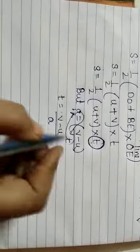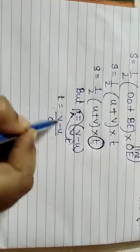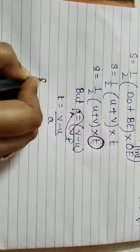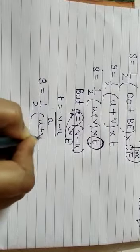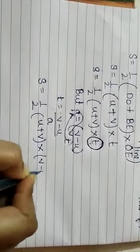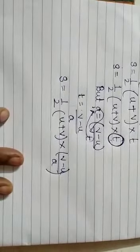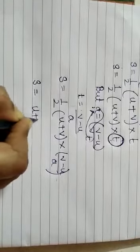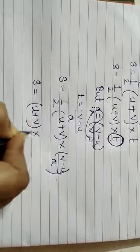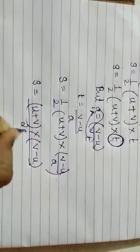Now in my equation, in place of t, I can put this as a value. So the equation is S is equal to half u plus v into v minus u upon a. We can do that. Now S is equal to u plus v into v minus u upon 2a.